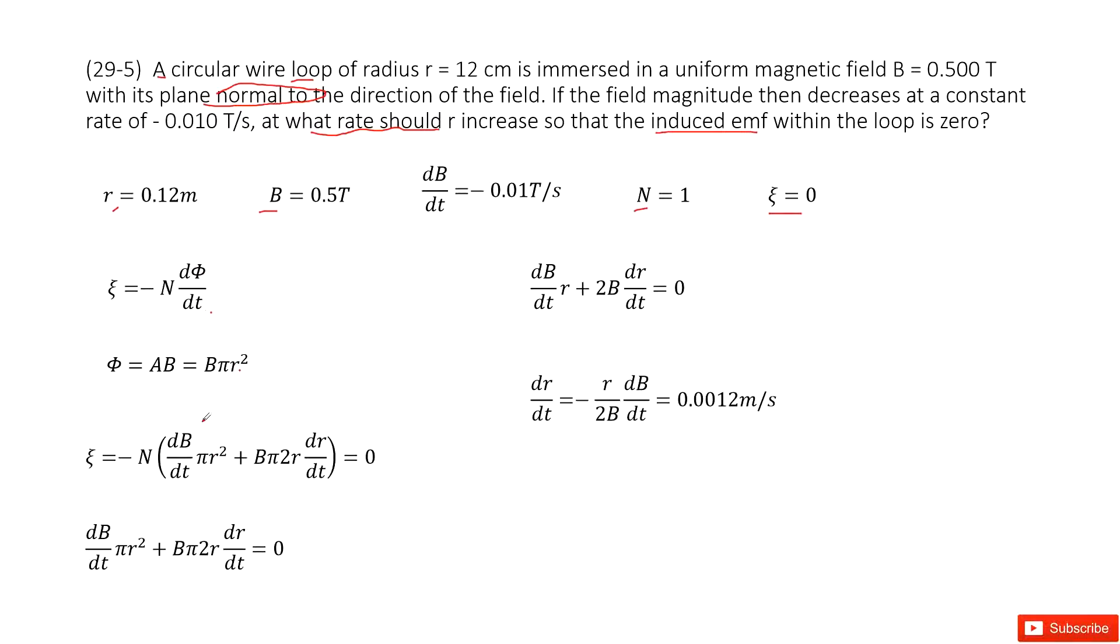Now we find d phi over dt. If you look at it there, you can just write it in this way. d phi over dt, then we can do the derivation for the variables B and r. So first one for variable B, and for r is 2r dr/dt.